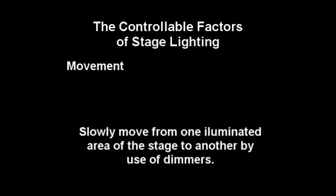Finally, a lighting designer can also control the movement of the lights. The most common way of doing this is to light specific areas of the stage independently, and then raise the intensity of one part of the stage and lower another. With a technique known as a crossfade, the illuminated area of the stage can be lowered while raising the dim area. The result will be that the audience's attention will shift from one part of the stage to another by virtue of the movement of the intensity.